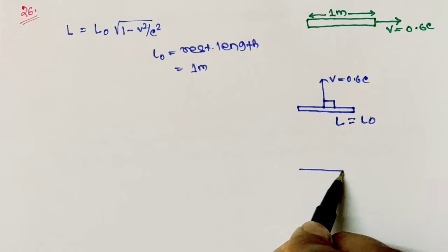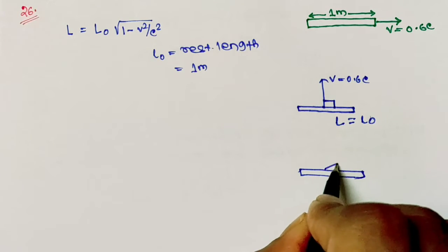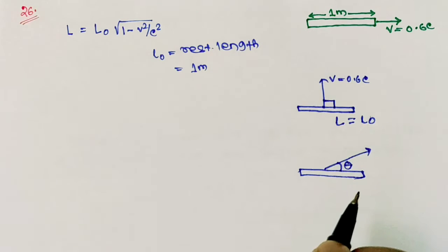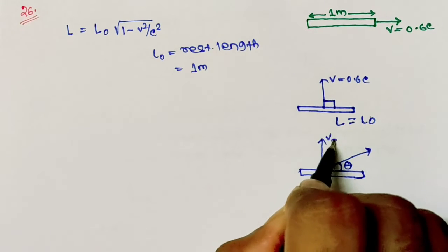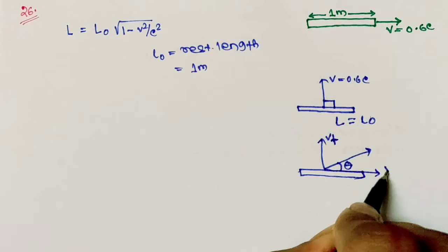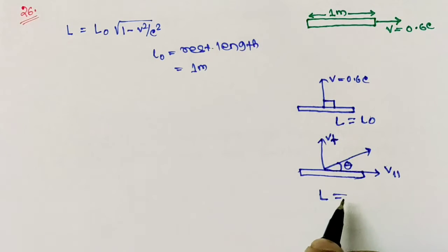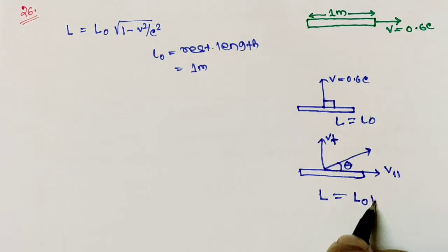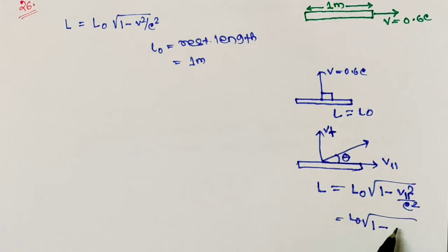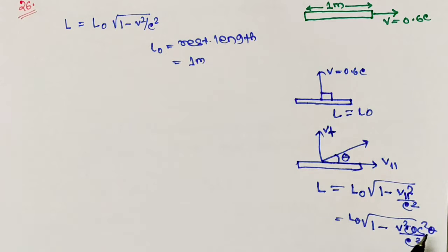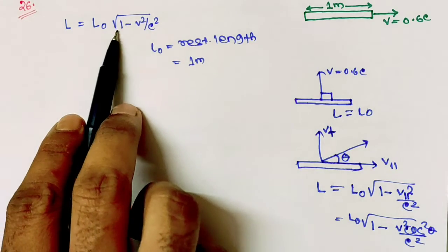Length changes only when the object has a velocity component parallel to its length. If the object moves at angle theta to its length, the velocity has two components — a perpendicular component and a parallel component. The contracted length L is given by L0 times the square root of 1 minus v_parallel² by c², where v_parallel equals v·cos(theta). Here theta is 0, so cos 0 is 1, giving L equals L0 times square root of 1 minus v² by c².